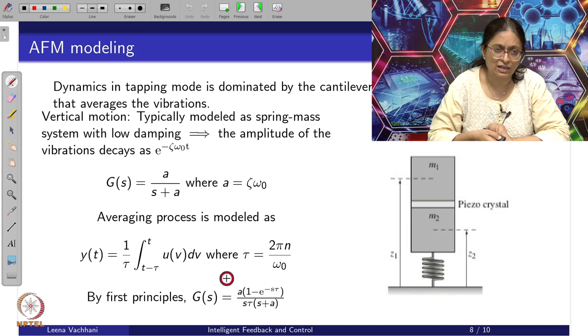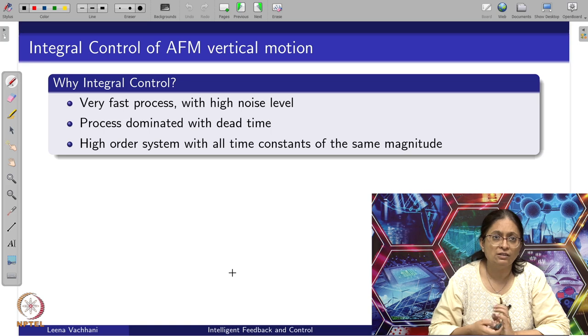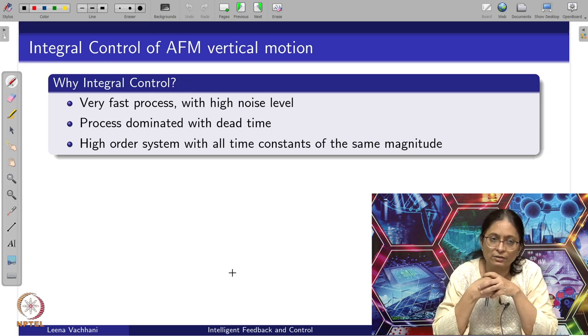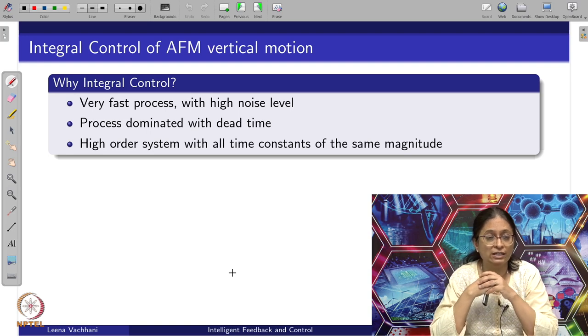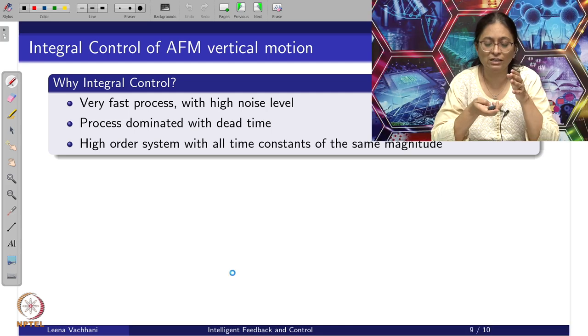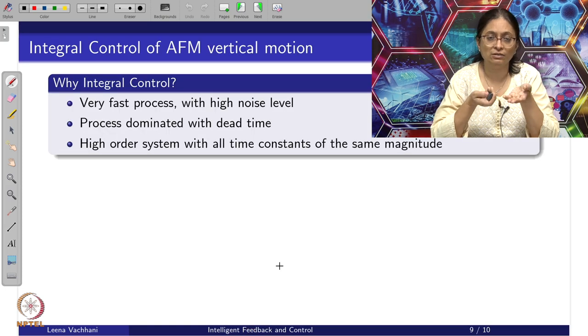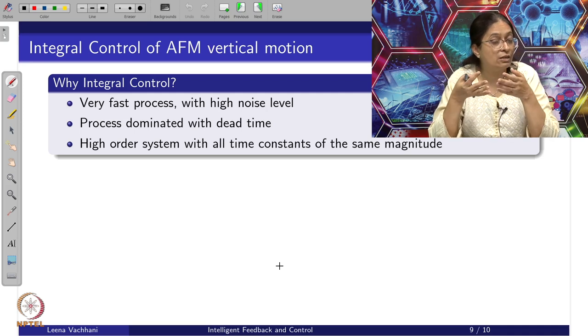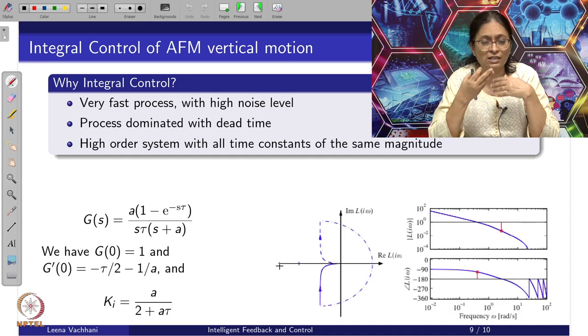Given this kind of transfer function, we will use some kind of control to get this z. Why are we choosing integral control in this case? We are choosing integral control because this is a very fast process with high noise levels. We see that even vibrations are attached to it. At the same time, we want this tapping to happen rigorously. The process is dominated by dead time. When we model it, there is an e power minus s tau term coming up. It means it is a lag dominated system. Also it has higher order system with all time constants of the same magnitude. So we can't say there exists a particular dominant pole. So in such a case, I am resorting to integral control.